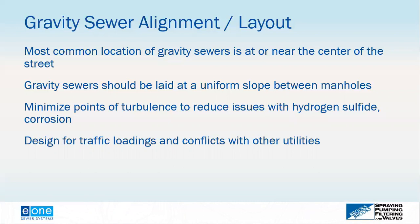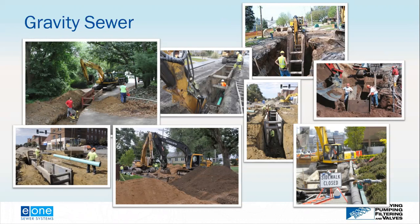Gravity sewer systems must account for traffic loadings and conflicts with other utilities such as water lines, gas lines, and fiber optic cables. The sewer must be at an elevation below the water line, with code-mandated separations. Utility conflicts may require the gravity sewer to be installed deeper than the slope and velocity requirements alone would dictate. These constraints, combined with the need to stay in the middle of the road and minimize expensive manholes, illustrate the challenges of gravity sewer installation as shown in construction site photographs.